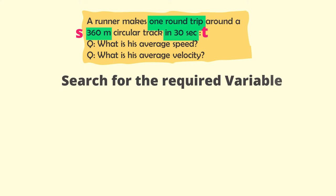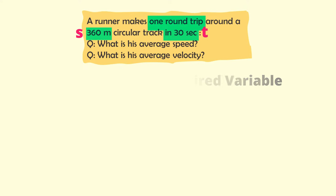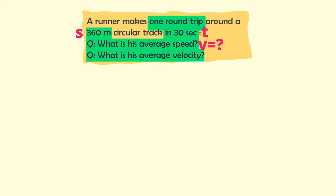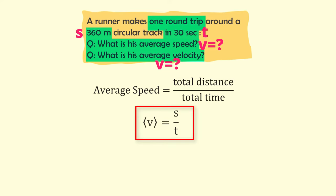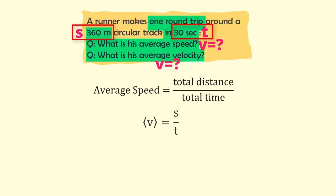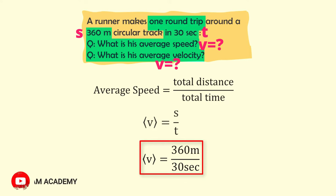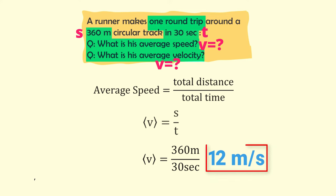After highlighting the given data, I look for the required variables. Here, we need to find average speed v and average velocity v-arrow. We know that average speed equals total distance divided by total time, so v equals s divided by t. The total distance s is 360 meters and total time is 30 seconds. Hence, average speed equals 360 divided by 30, which is 12 meters per second.